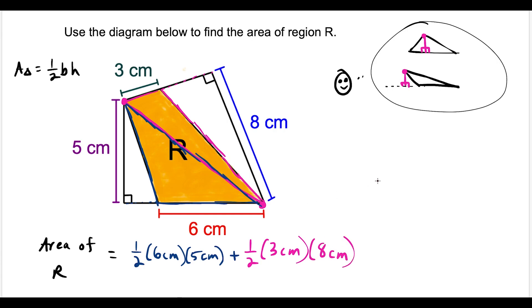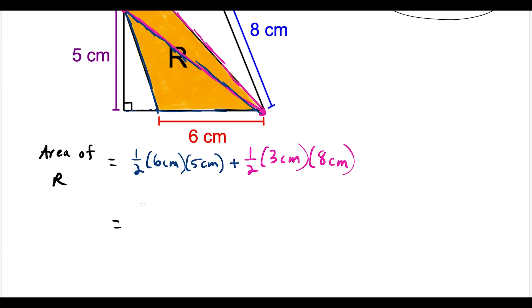Now we just have to simplify the numbers. One half times six is going to give us three, and then three times five is going to give us 15. Notice we have centimeters times centimeters which is square centimeters. Now we have plus—we could do half times eight is four, and then four times three is 12, and centimeters times centimeters is square centimeters. So the area of region R, if we add this, is going to be 27 square centimeters.